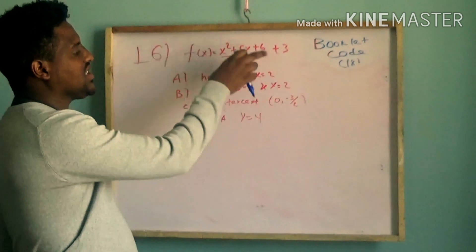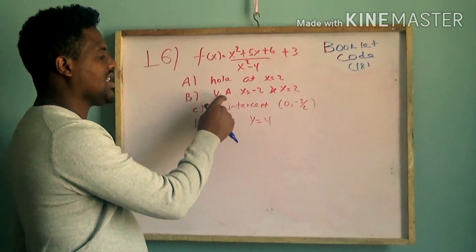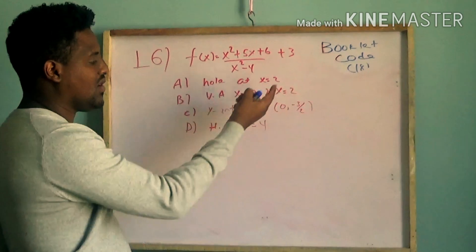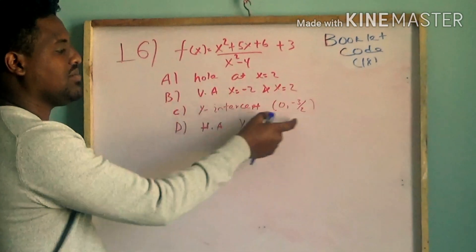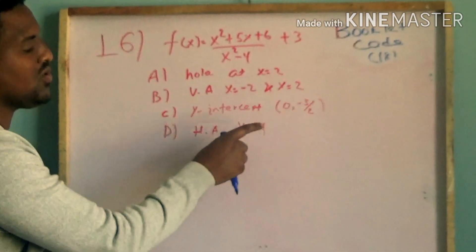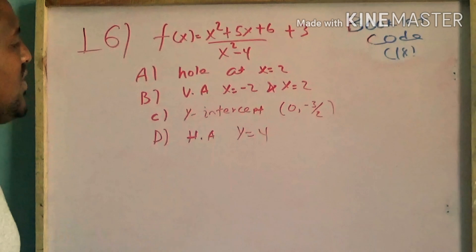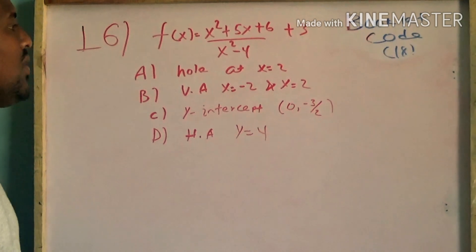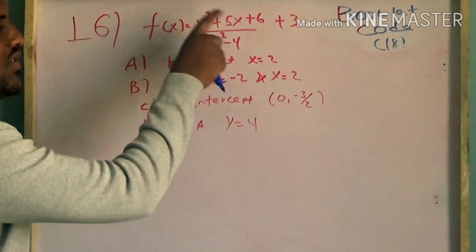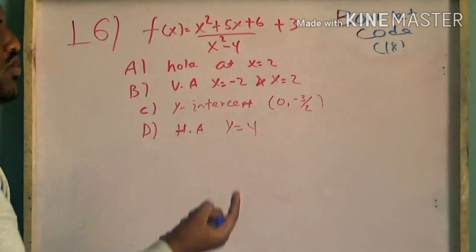This function has a hole at x equals 2. We will write the function of x squared minus 1 and y intercepts. We will write that y equals 4. If we write the function of hole, it is equal to 0 over 0.